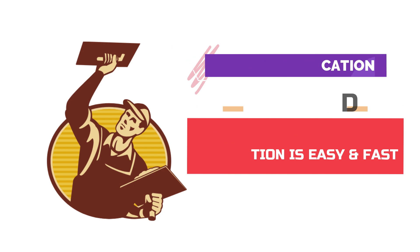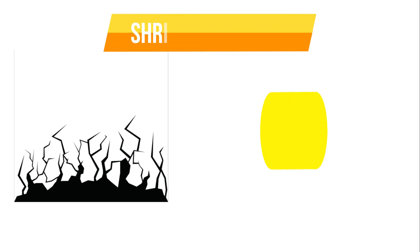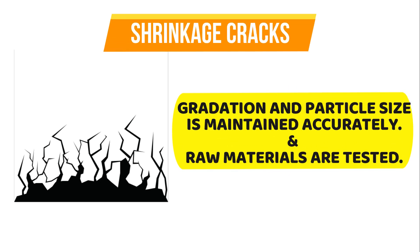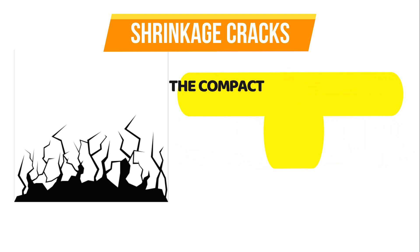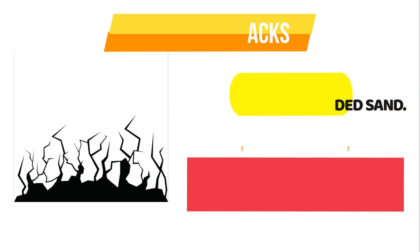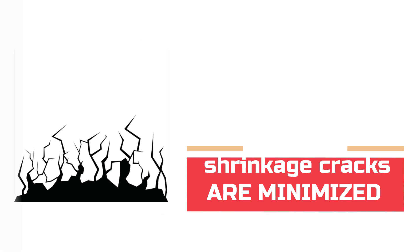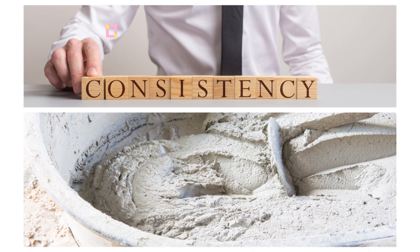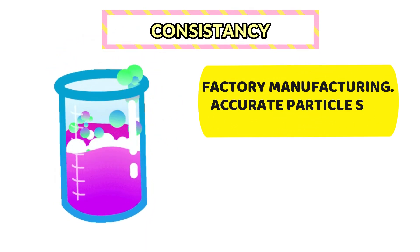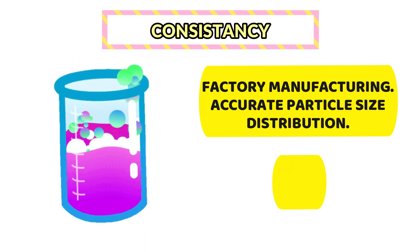Next is shrinkage cracks. Gradation and particle size is maintained accurately, and the raw materials are also tested. The compactness is maintained in plaster due to graded sand, and hence shrinkage cracks are minimized. Next is consistency — factory manufacturing ensures accurate particle size distribution and maintains consistency.